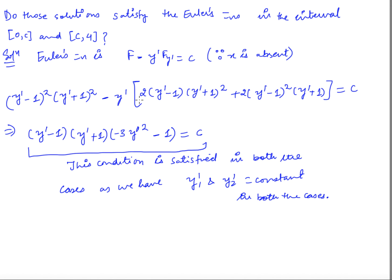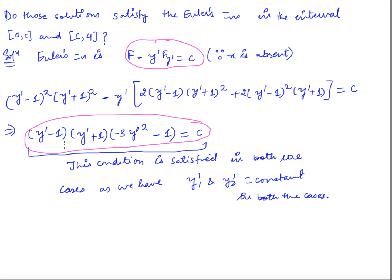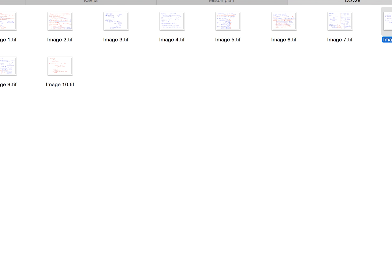Since f is independent of x, the Euler equation simplifies. Substituting f, we verify that in both cases y1' and y2' are constants, so the left-hand side is constant. Therefore both solutions do satisfy the Euler equation.